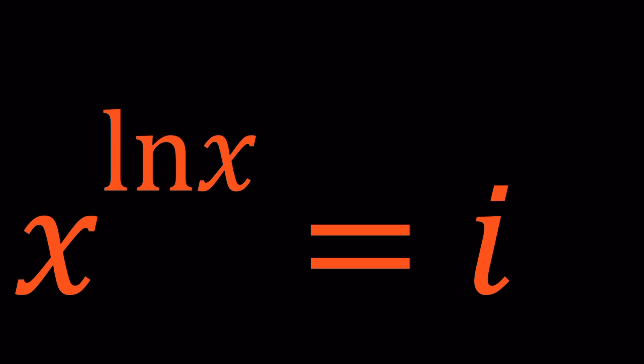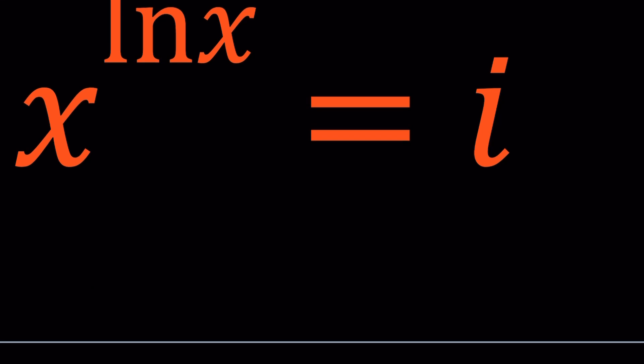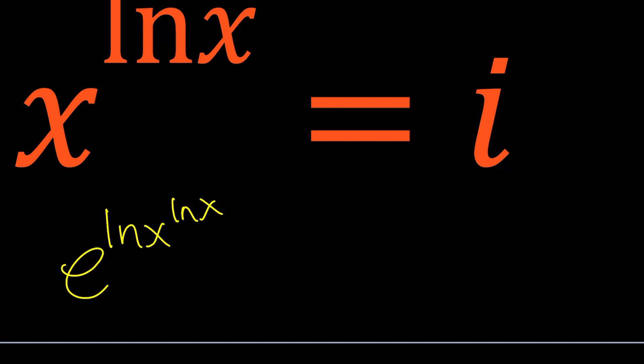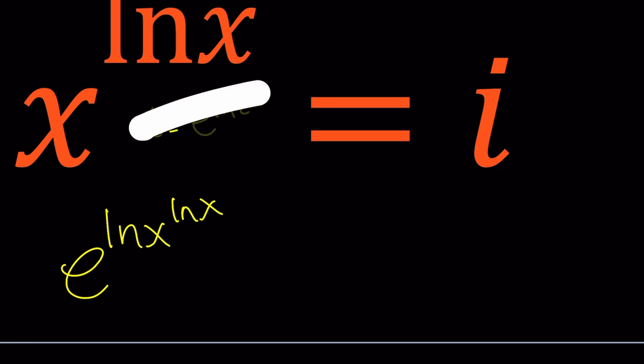We have x to the power ln x equals i. I'm going to write x to the power ln x as e to the power ln x, because obviously if you have something like t, you can write it as e to the power ln t. I think this is true for complex numbers as well. Now let's set it equal to i, but instead of i, let's use Euler's formula in the most compact form.